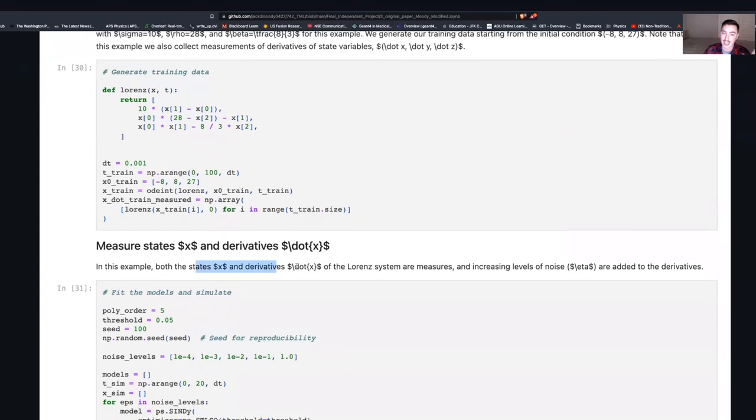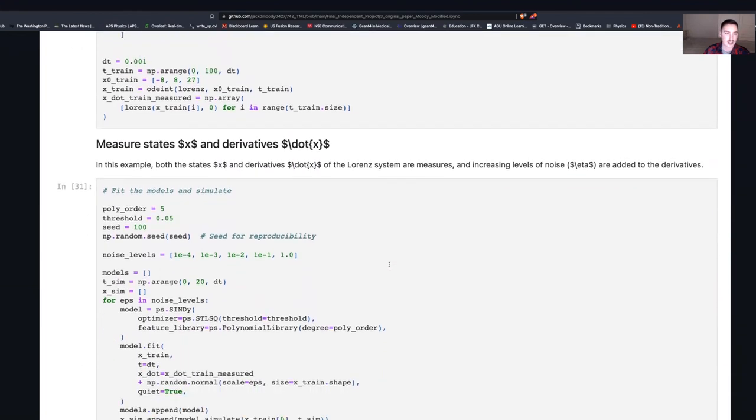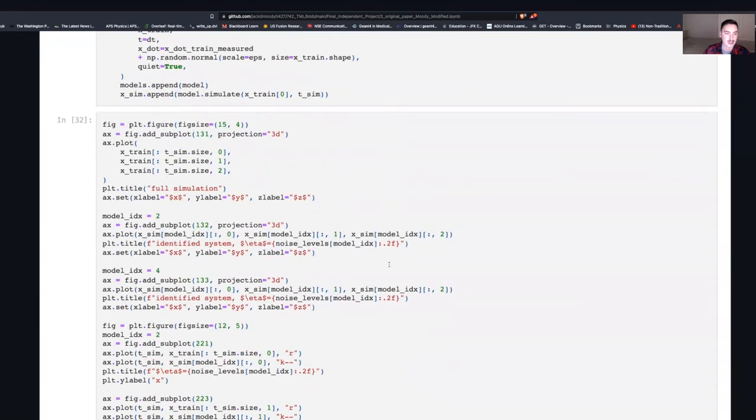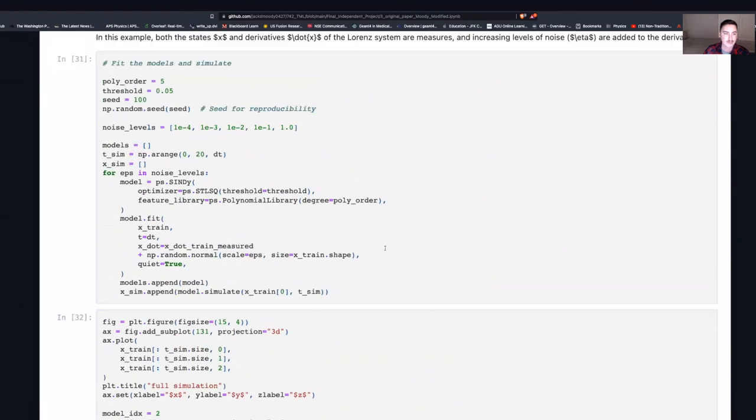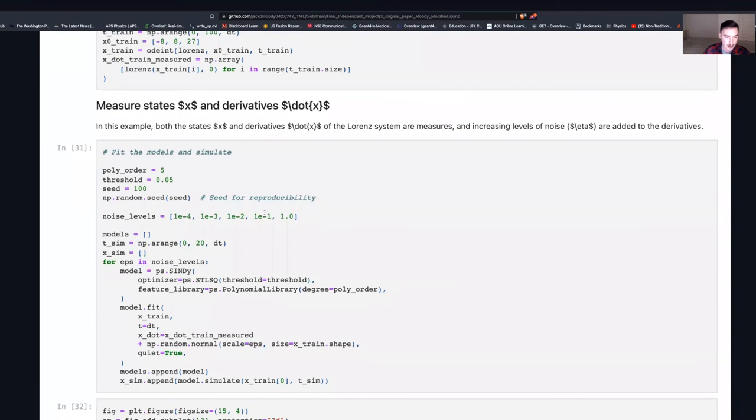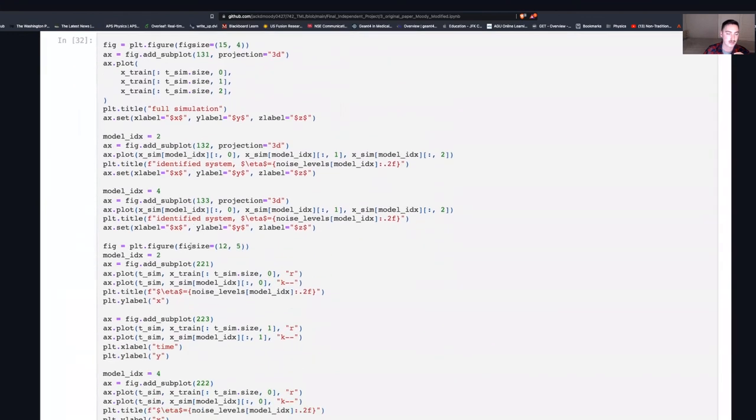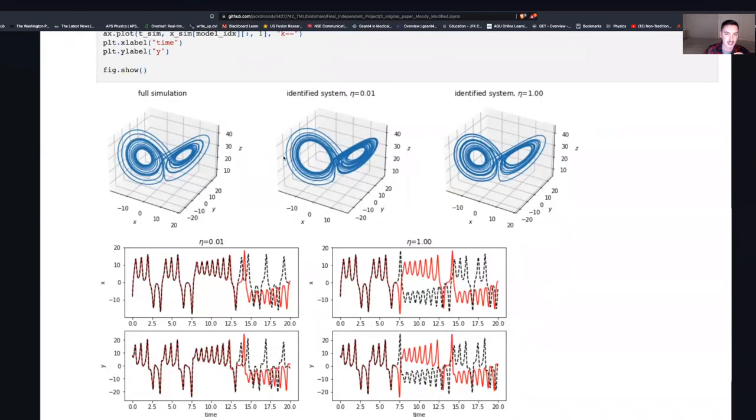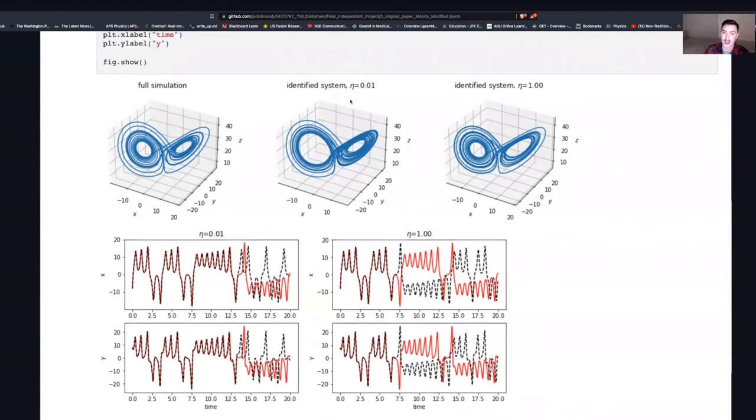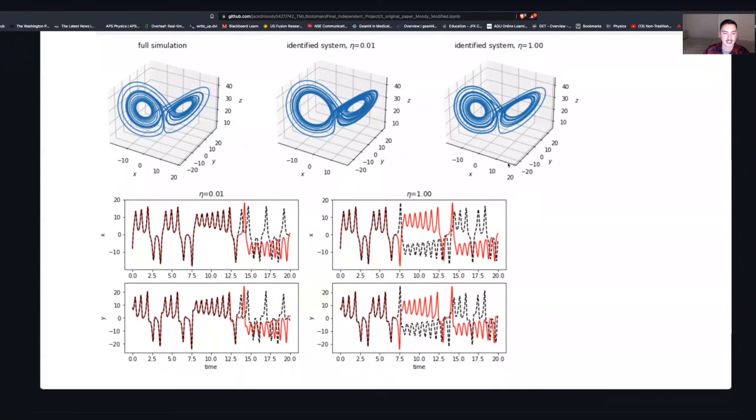But in this example, both the states x and its derivatives x dot of the Lorenz system are going to be measured with increasing levels of noise that are added to the derivatives. So the added level of noise would be 0.01 and then 1. So we go through, fit the models, simulate the noise, and now we'll actually go through and plot. And we can see that this is the full simulation. This is the identified system with the noise at 0.01 and then 1. As you can see here, CINDY is doing an incredible job of being able to reproduce the system even with the additional noise. So it's an incredibly strong algorithm.